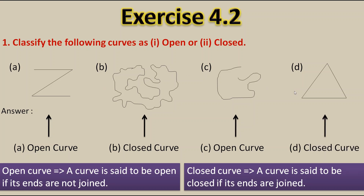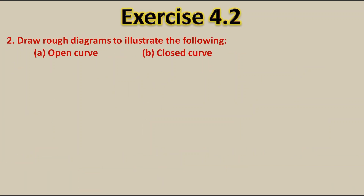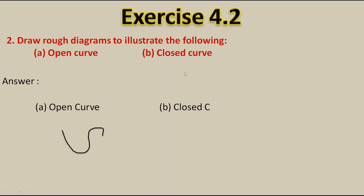Now let's move to the second question: Draw rough diagrams to illustrate the following. As we know now what is open curve and closed curve, let's draw an open curve first. This one is a closed curve. The open curve is where ends are not joined, and here the ends are joined therefore it is a closed curve.